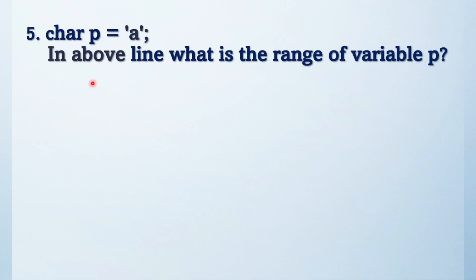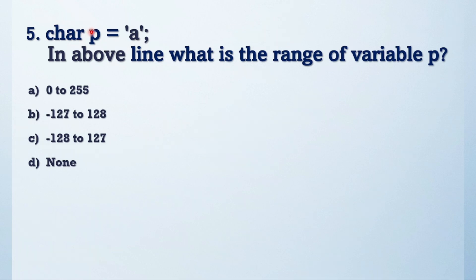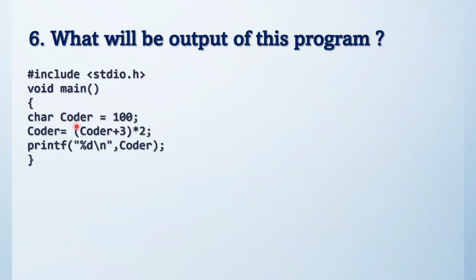Moving to the next question: given 'char p = a', what is the range of variable p? These are the options. Whenever you see only the 'char' data type, the compiler treats it as signed character by default. The range of signed character data type is -128 to 127.